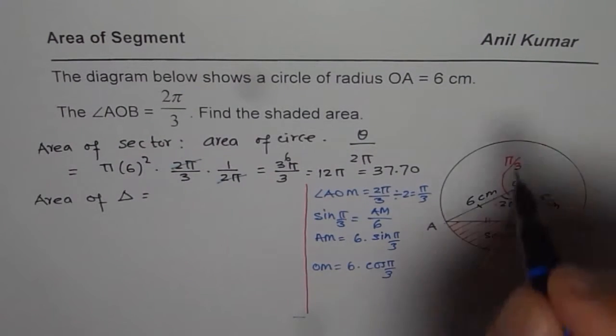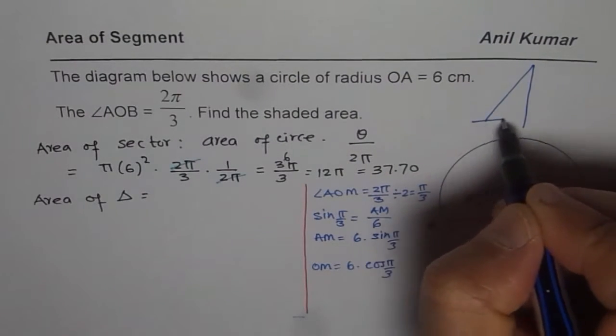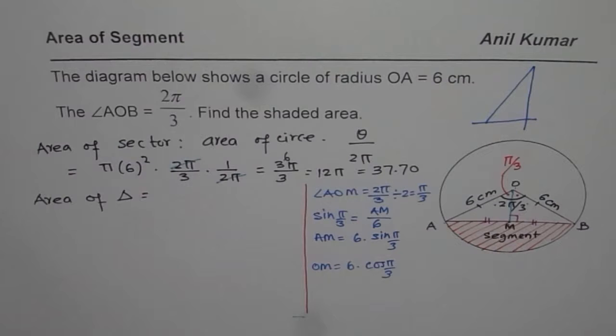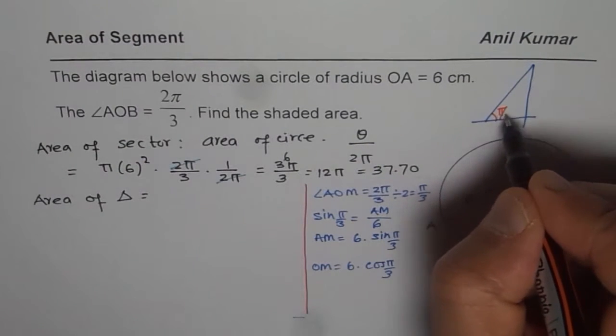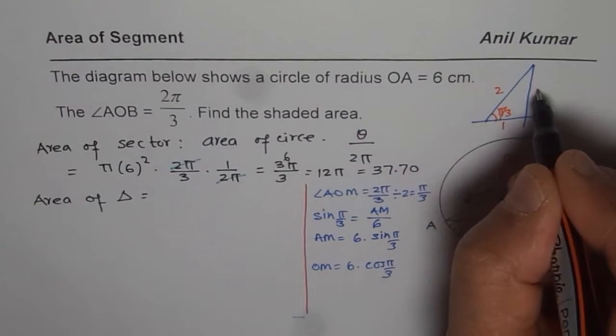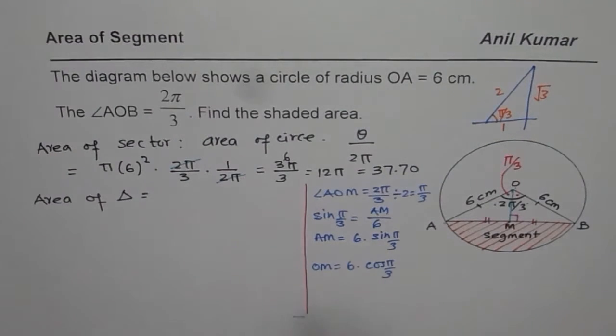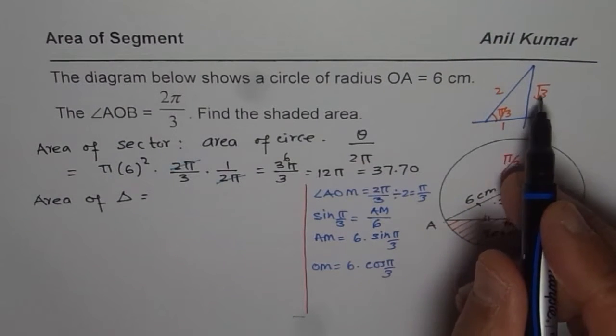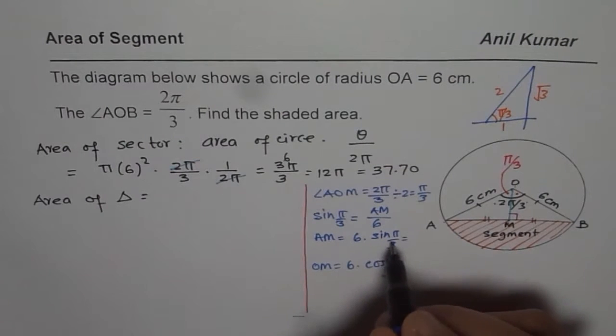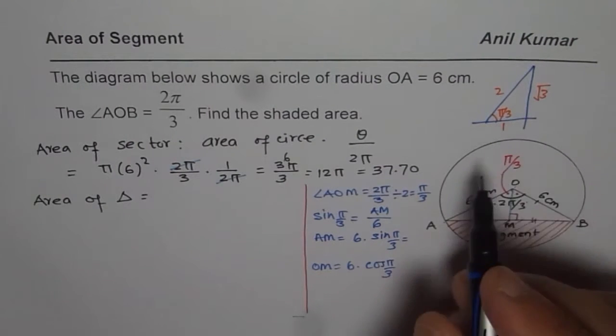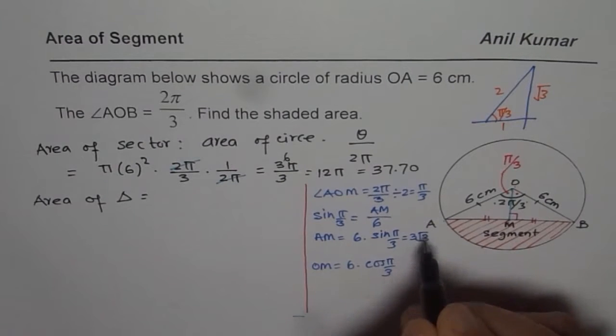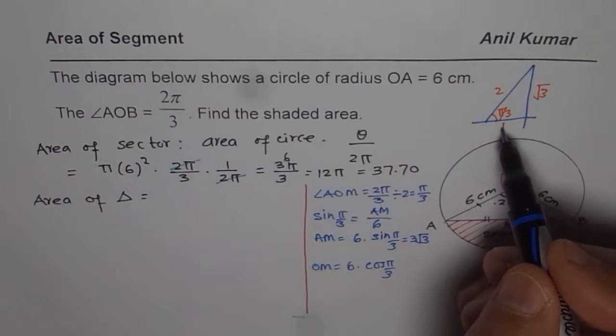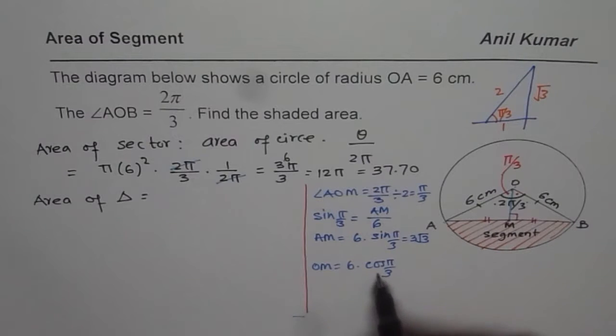You can use special triangles, you know π by 3 triangle. So in a special triangle we know if this angle is π by 3 then the sides are 1 to square root 3. So you know what AM is. So we can write AM as equal to sin π by 3, square root 3 over 2. So if you calculate this is 3 square root 3. And cos π by 3 is half of 6, so it is 3.